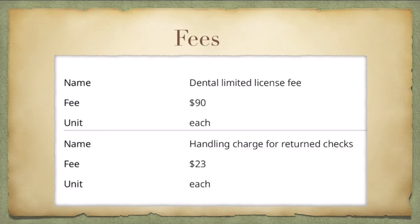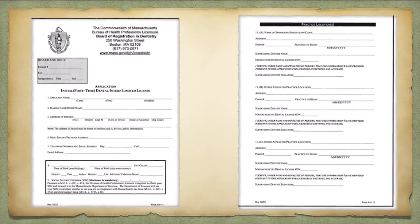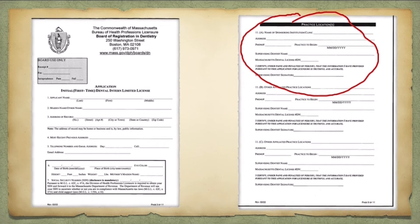I will provide the link to the website where you can find all the address and mailing details for sending your documents. Now, for the initial dental intern license application, here is an important catch: in the application form, you must provide the practice location — specifically the address of your supervising dentist. This means you first need to find an employer or supervising dentist who allows you to practice in Massachusetts before you can apply for this limited dental intern license.